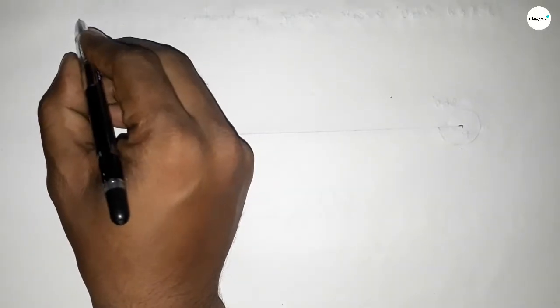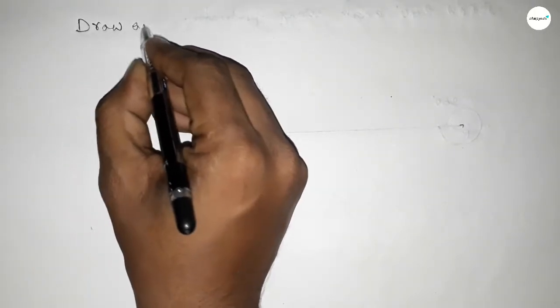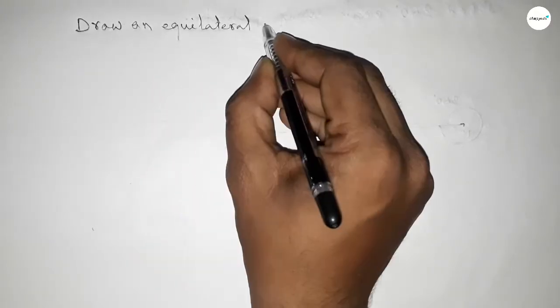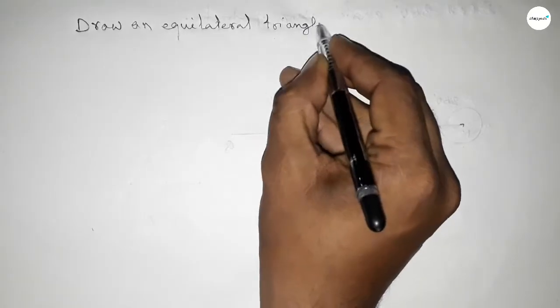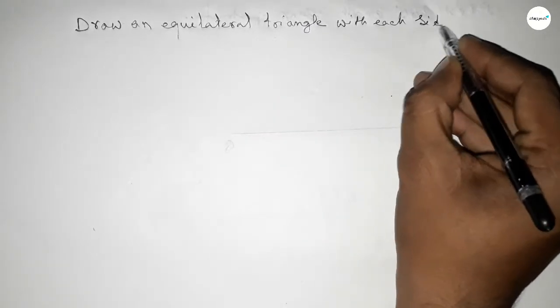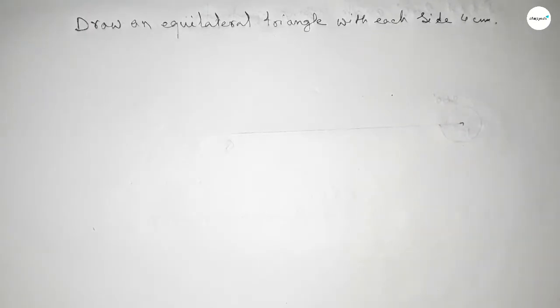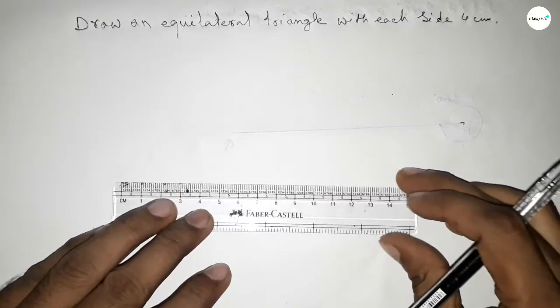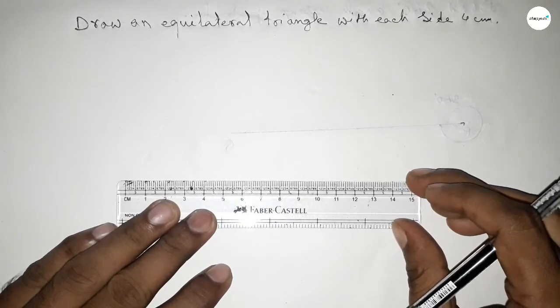Hi everyone, welcome to SSR classes. Today in this video we will draw an equilateral triangle with each side 4 centimeters. Let's start the video.